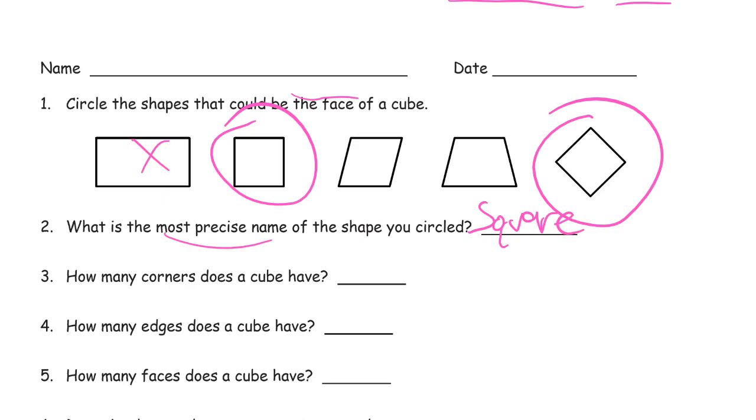We could also call it a rectangle or a parallelogram or a polygon or a quadrilateral or a rhombus or a kite. We could call it a lot of different things, but we call it a square. We know exactly what it is.